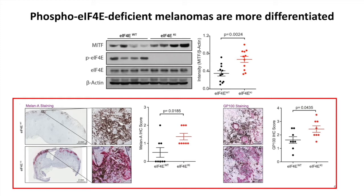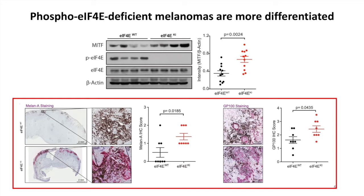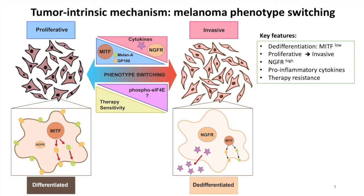Downstream of MITF, there are two highly immunogenic melanoma antigens, Melan-A and GP100. Both of them are significantly increased in the knock-in tumors. So the phenotype that the wild-type tumors are more de-differentiated points to a mechanism where phospho-EIF4E might contribute to a process in melanoma called phenotype switching.